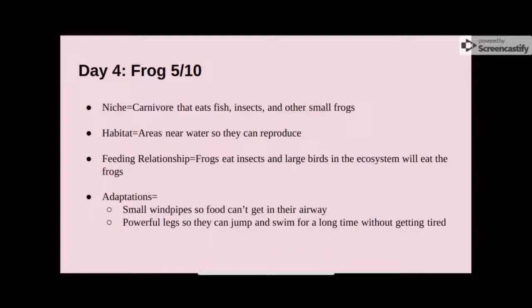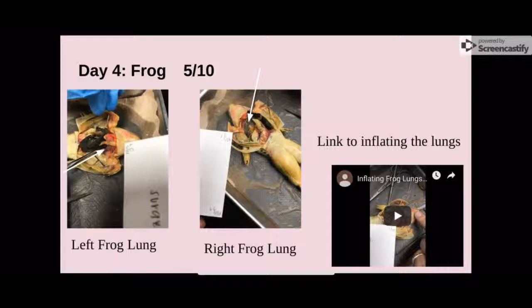The adaptations of the frog are that it has small windpipes, so food can't easily get stuck in the airway. It also has powerful legs, so it can easily swim and jump for a long time without getting tired. Two pictures show the left and right lungs of the frog. A video shows that when we blow air into the mouth of the frog, the lungs inflate.